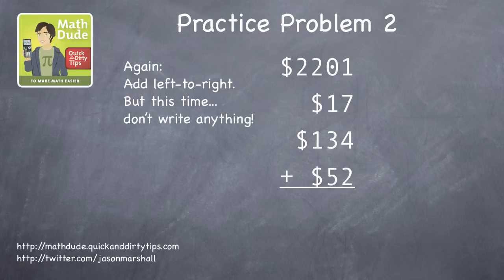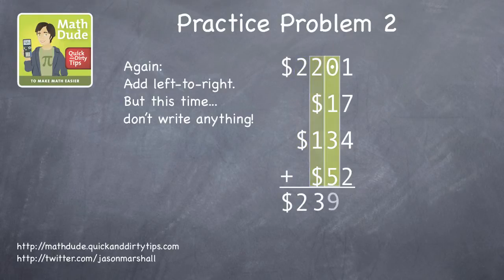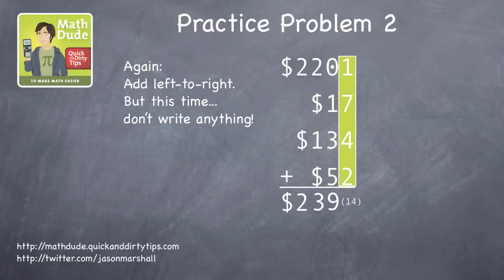The biggest digit is in the thousands, so start there on the left. There are two thousands, three hundreds, nine tens, and fourteen ones.